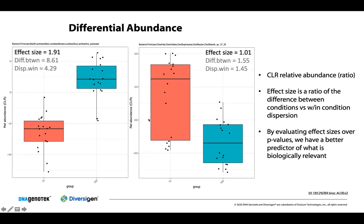For visual reference, here's what effect size looks like when you have a large effect — the between-group differences are big and you can easily separate the two groups. Versus an effect size closer to one, where the difference between the means of two taxa is measurable but they are so overlapping that the variation is obscuring our ability to evaluate whether they are truly different.